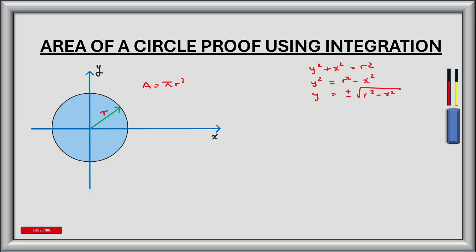So let's look at finding the area of a quarter of this circle, and then multiplying the result by 4 to get the full area of the circle. So the area would equal 4 times the integral from 0 to r of the square root of r squared minus x squared dx.